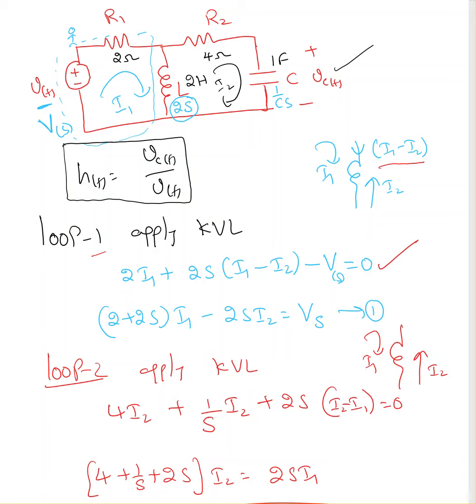Now, same way, loop 2 equation. So, 4 times I2 plus 1 over s times I2 plus 2s times I2 minus I1. So in loop 2, I'm assuming I2 current is larger than I1.